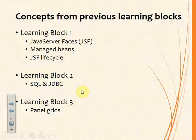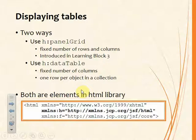Panel grids are a fixed size in terms of both columns and rows. What we'll look at with data tables will allow us to display collections of objects. The data table will still have a fixed number of columns, but it will have one row per object in the collection, so it's a variable-sized table.